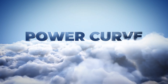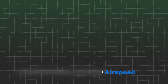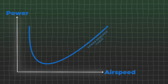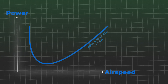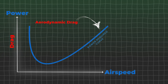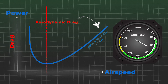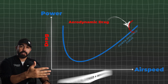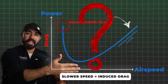Starting off with the power curve, or what it's technically called the power required curve. It's essentially a graph with the x-axis being airspeed and the y-axis being power, which gives us a line of the power required to fly at a given airspeed. This power required line is also a function of aerodynamic drag, which helps us figure out the airspeed where we create the least amount of drag. It also tells us the faster we go, the more drag there is, as well as the slower we go, the more drag there is.